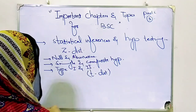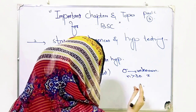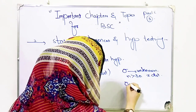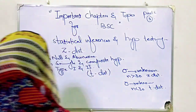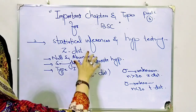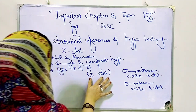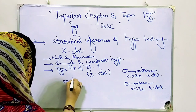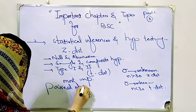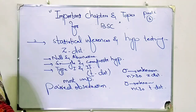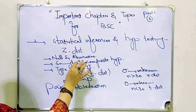The difference: if sigma is unknown and n is greater than 30, use Z. If sigma is unknown and n is less than 30, use T distribution. One very important topic is paired observations — testing hypothesis about two means with paired observations. This must be prepared for T distribution. This is the most important topic and one question will definitely come from it.